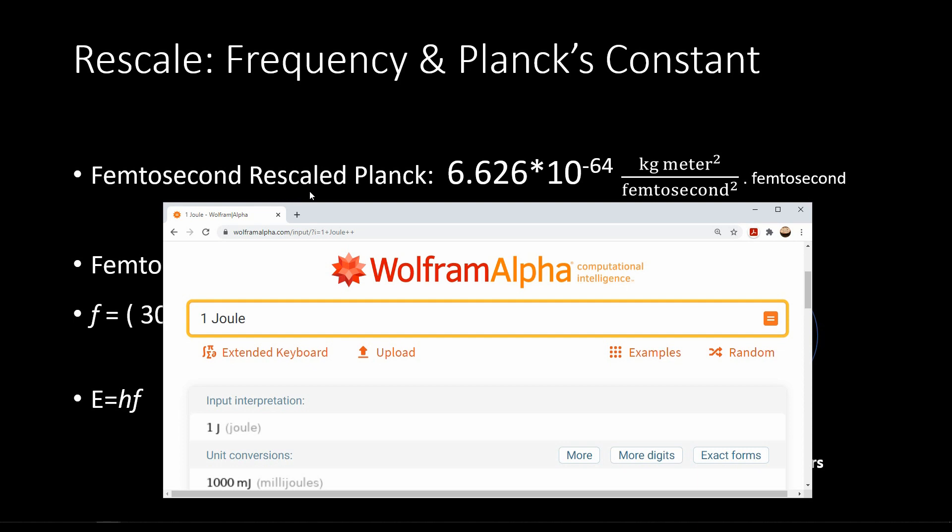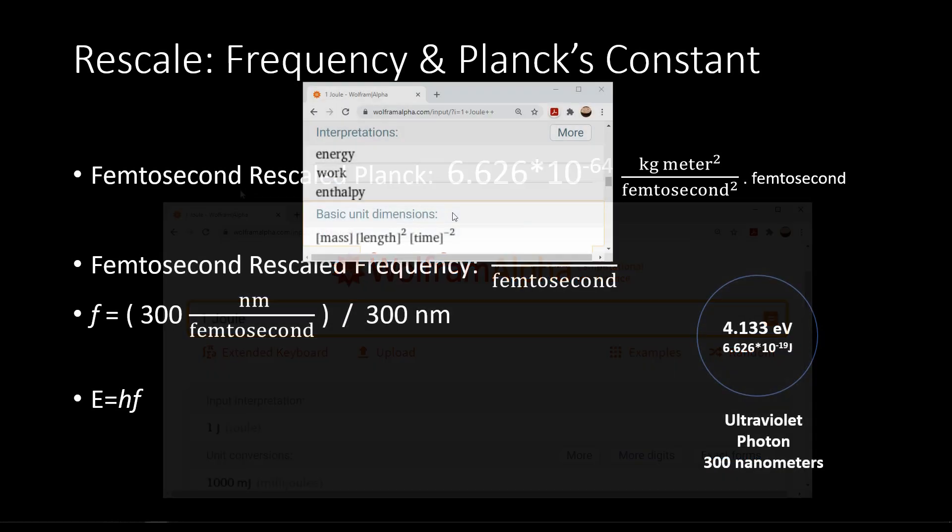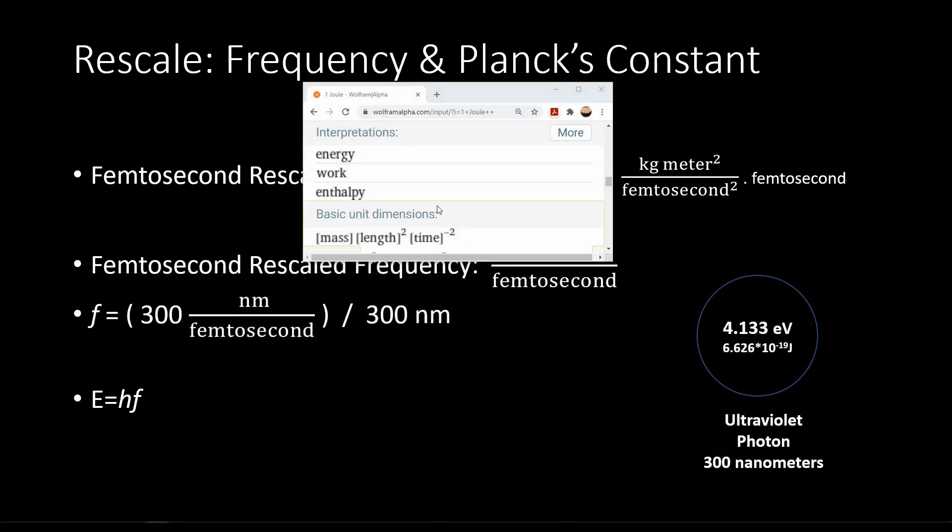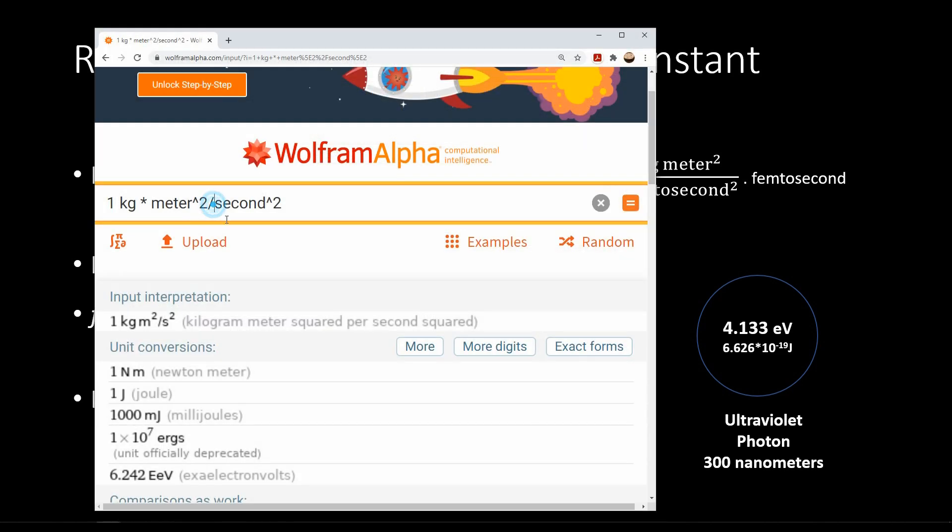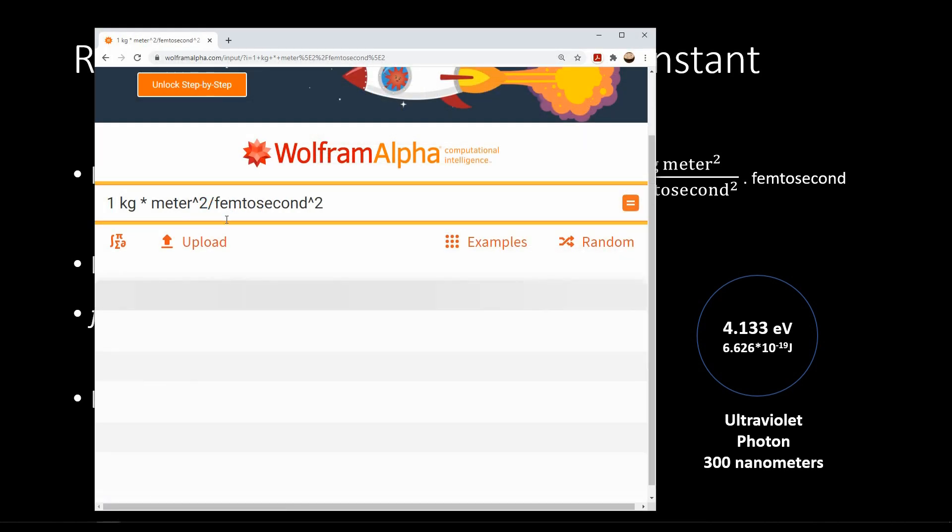The basic units for a joule of energy is mass, length, and time. We just need to replace the second with femtosecond. Here are the units for a joule, and we can change this to a femtosecond. You can see that now it's 10 to the 30 joules.